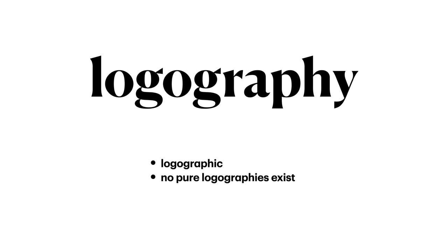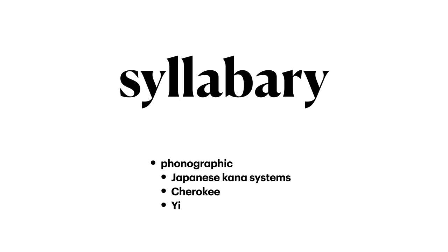A logography would be a writing system that is purely logographic in nature. Again, no pure logographies exist. Chinese is an example of a writing system that is partially logographic, but it is not purely a logography — rather it is a system that combines a logography with a syllabary. A syllabary is phonographic in nature; in a syllabary, syllables are encoded. Japanese kana systems, Cherokee, and Yi are examples of syllabaries.